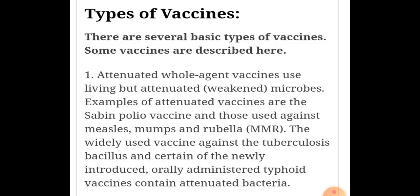Attenuated whole agent vaccines use living but weakened microbes — attenuated maanin hota hai weak. Living hoti hain par weak hoti hain. Examples of attenuated vaccines are Sabin polio vaccine and those used against measles, mumps, rubella. The widely used vaccine against the tuberculosis bacillus and certain newly introduced orally administered typhoid vaccines contain attenuated bacteria. So attenuated whole agent vaccine mein living pathogen use karte hain par weak hota hai — example MMR, that is measles, mumps and rubella.